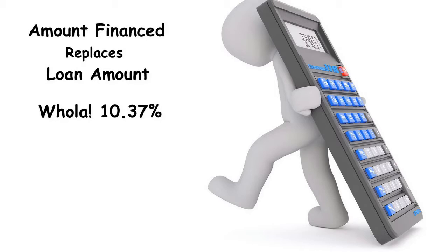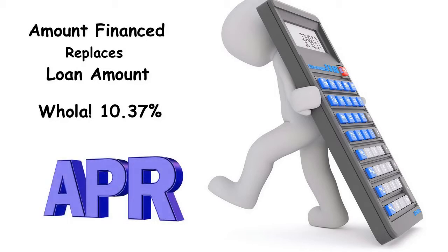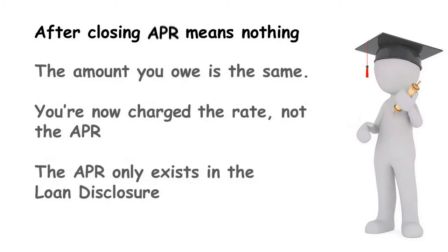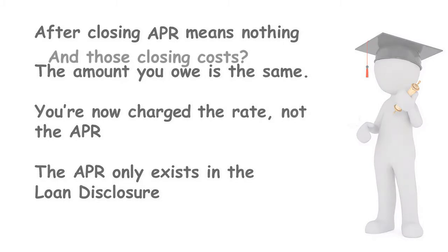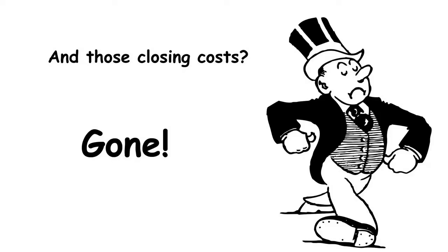And that's it! This is what the government calls the annual percentage rate, or APR. And as soon as the loan closes, none of this means anything. The amount you owe is still the loan amount, and the rate you're actually being charged is still the note rate — not the APR. The APR only exists in loan disclosure, so don't be confused and think the APR is the rate you're paying during the loan. And those closing costs? Gone — that's the bank's money now.